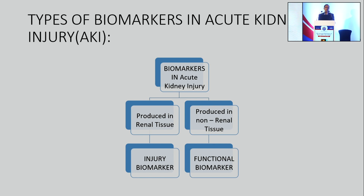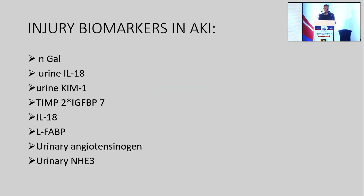So we have a contest between functional biomarkers and injury biomarkers to tell us kidney status. Among the biomarkers most talked about, we have NGAL, urinary IL-18, KIM-1, TIMP2, IGBP7, L-FABP, and so on. We have multiple options — more than 300 — but I will revisit this slide.